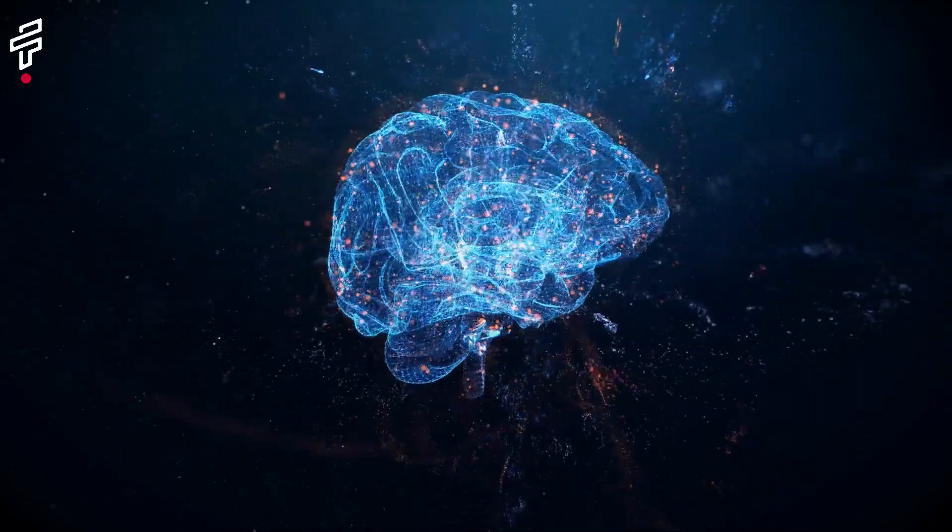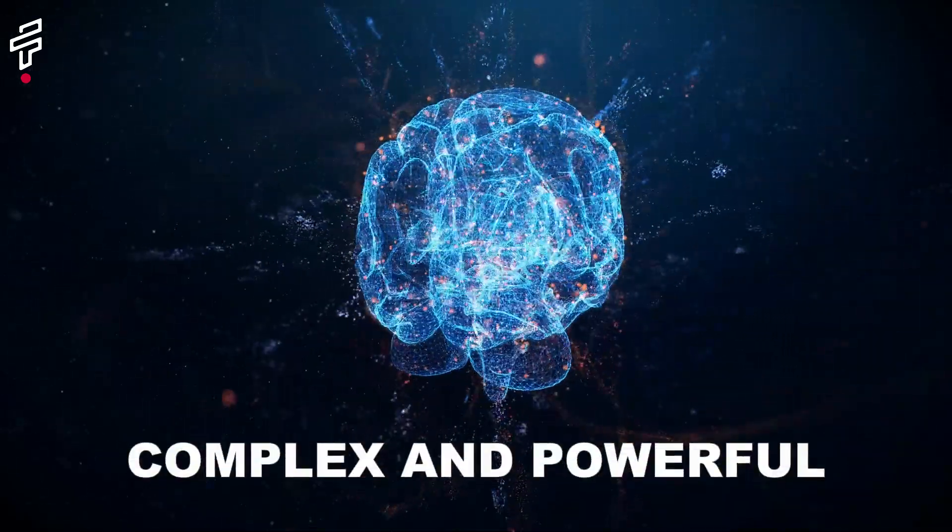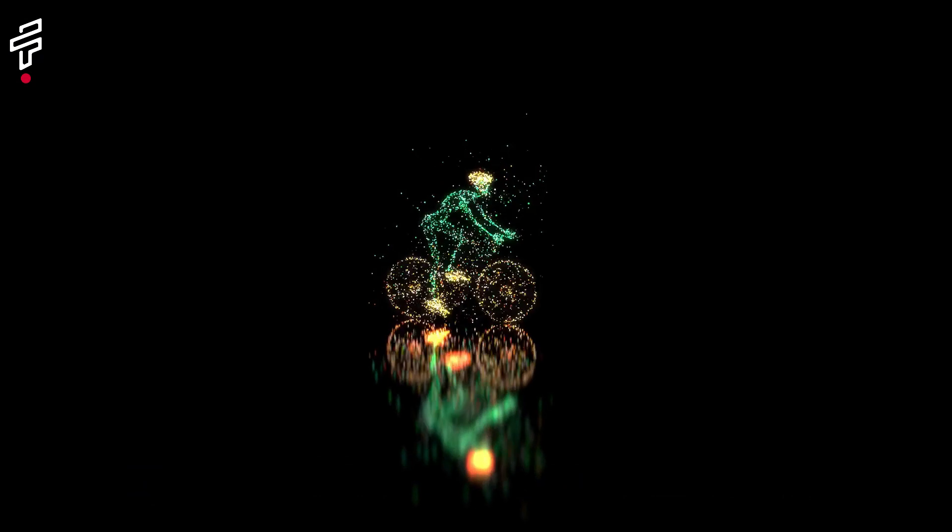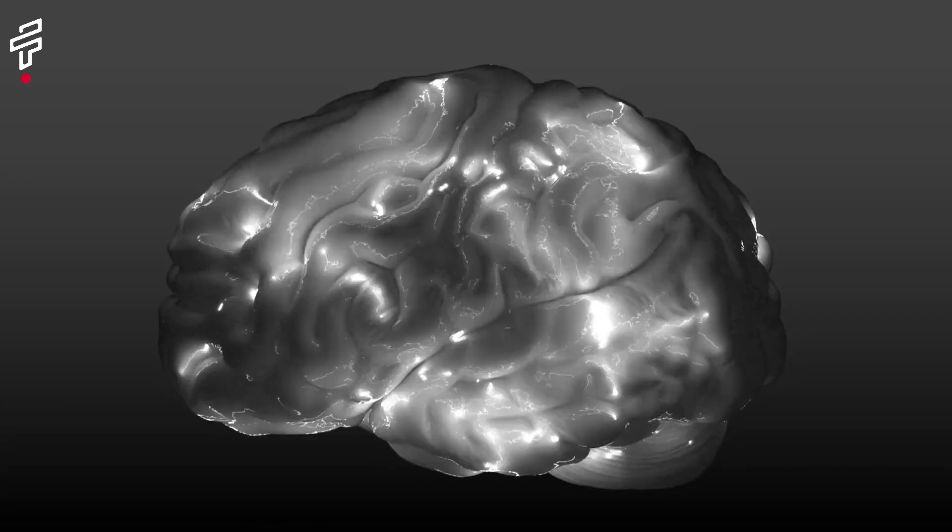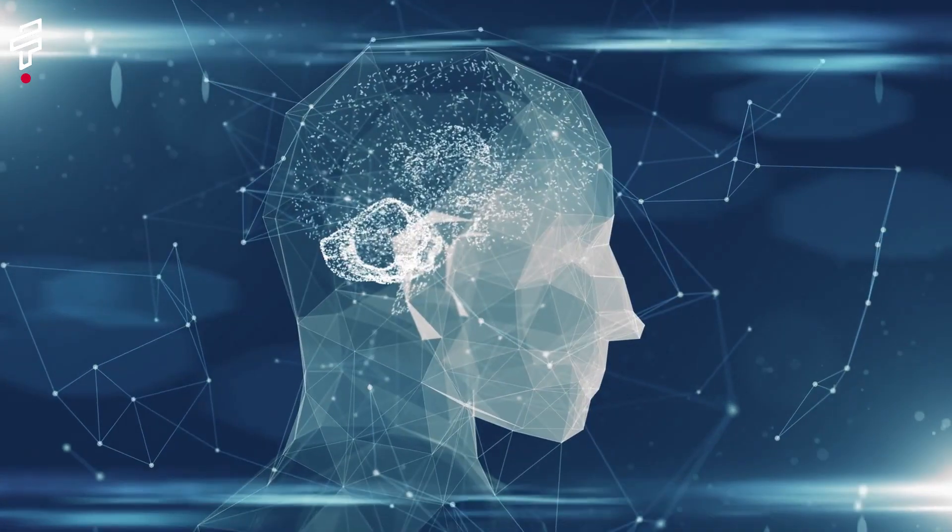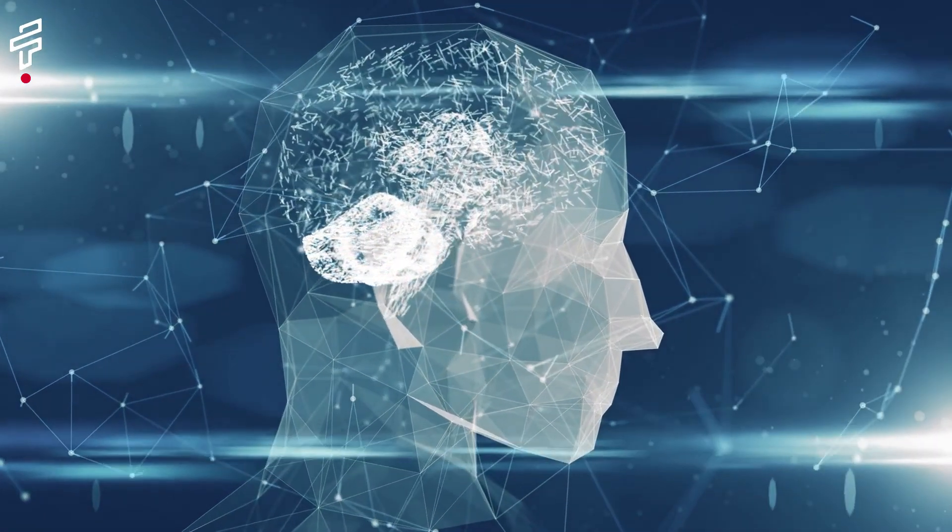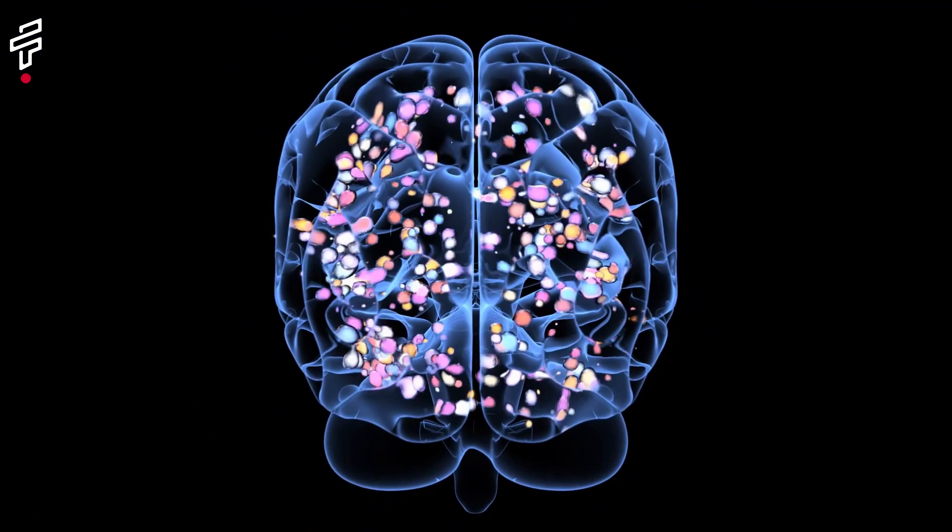Fact number 10, the human brain is an incredibly complex and powerful organ. It is responsible for our thoughts, feelings and actions, and it is capable of some truly amazing things. We are still learning about the brain, but we already know that it is one of the most important organs in the body.